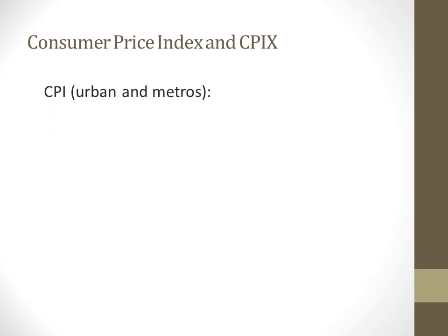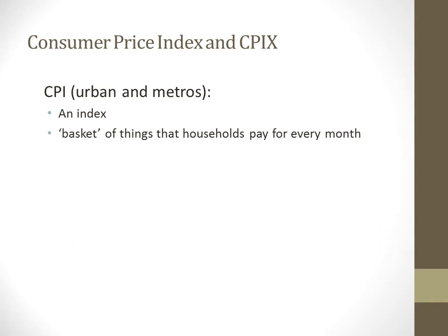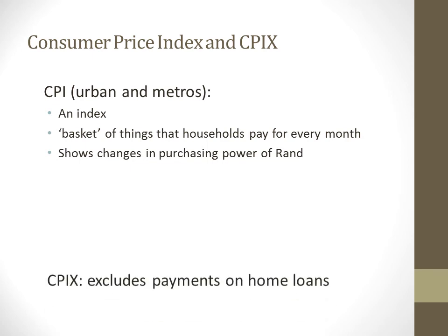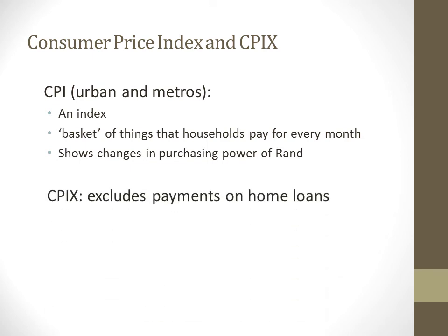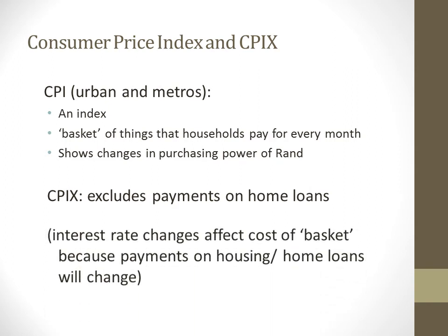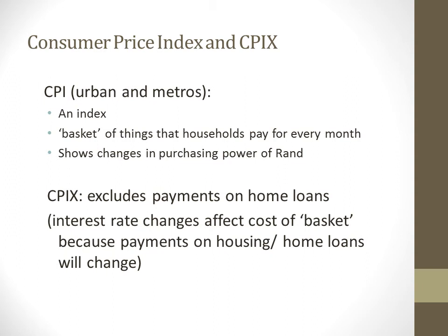The Consumer Price Index (CPI) is measured in metros and tracks a basket of things that households pay for every month, showing changes in purchasing power. The CPIX is CPI excluding mortgage payments on home loans, because home loans are heavily affected by interest rate changes. A slight increase or decrease in interest rates significantly affects how much money households have, making it difficult to include in CPI — hence it's excluded, giving us the CPIX.